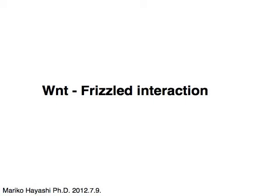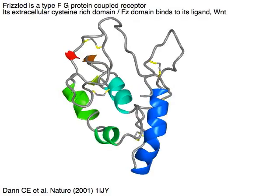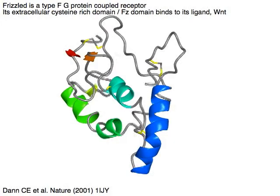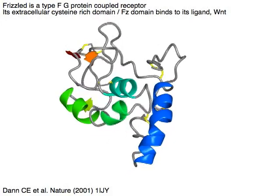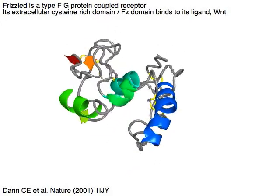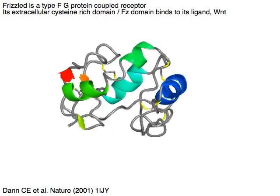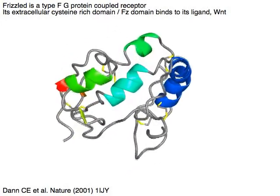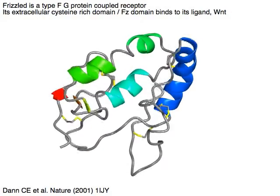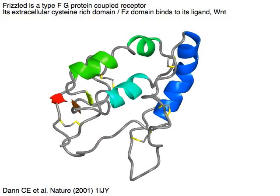WNT-Frizzled interaction. Frizzled is a type F G protein-coupled receptor. Its extracellular cysteine-rich domain, or Fz domain, binds to its ligand, WNT.